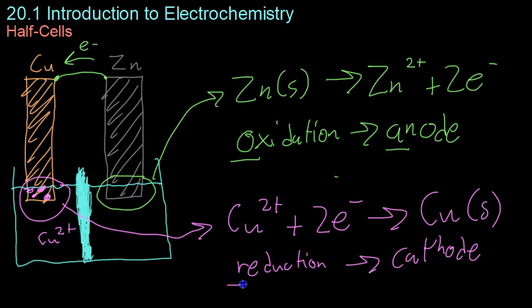That's easy to remember because reduction and cathode begin with consonants. So just to reiterate, oxidation occurs at the anode, reduction occurs at the cathode.